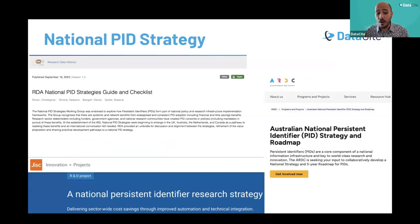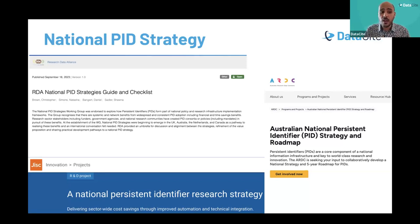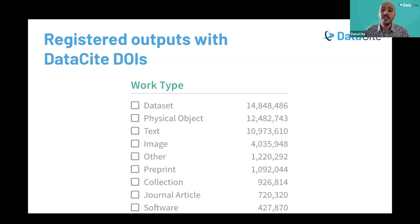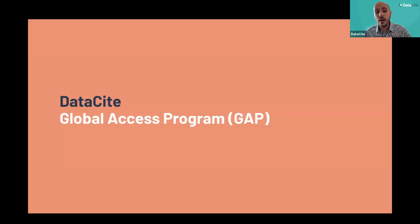We are also seeing countries creating their national PID strategies. The Australian Research Data Commons is creating their national PID strategy. JISC in the UK is doing that as well. The Research Data Alliance (RDA) issued guidelines and a checklist for any national center willing to create a national PID strategy. According to our DataCite registry, the 1,400 research organizations using our infrastructure are registering a wide range of resources: almost 15 million datasets, 4 million images, and 1 million preprints stored and deposited in institutional repositories.